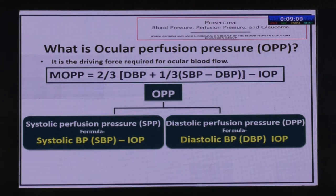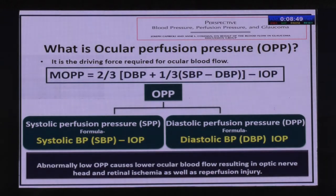It is really not possible in busy clinical settings to measure ocular perfusion pressure — which is the driving force required for ocular blood flow — as measuring mean ocular perfusion pressure is complex. However, we can look at two measurable values: systolic perfusion pressure, which is systolic blood pressure minus IOP, and diastolic perfusion pressure — probably more important — which is diastolic blood pressure minus IOP.